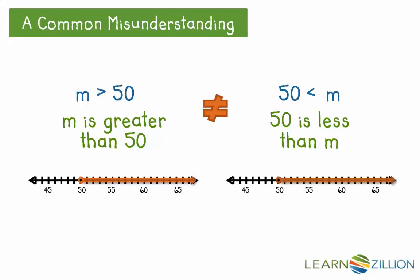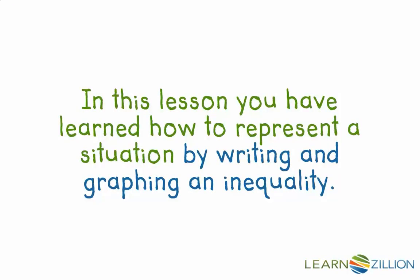What do you notice? Since both graphs are the same, the two inequalities are equal. So 50 is less than m is equal to m is greater than 50, which means that 50 is less than m could also represent the situation: Grace spent more than $50 at the mall. In this lesson, you have learned how to represent a situation by writing and graphing an inequality.